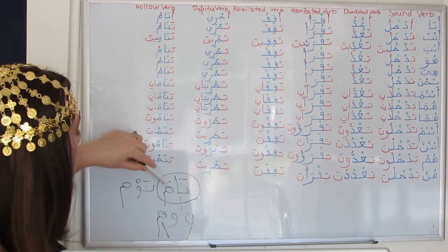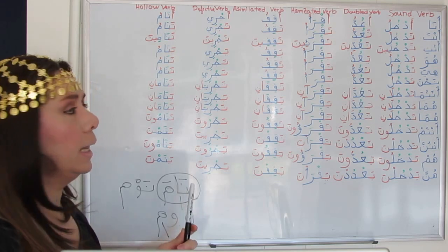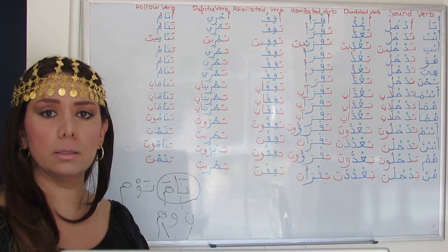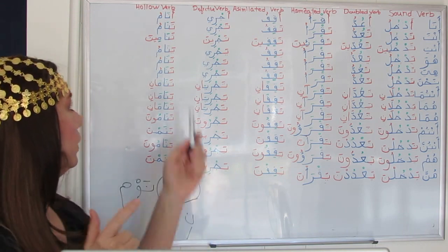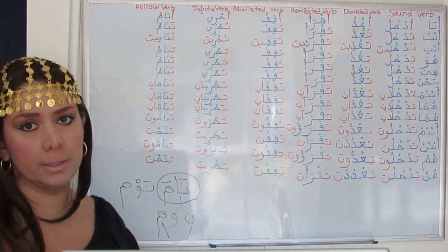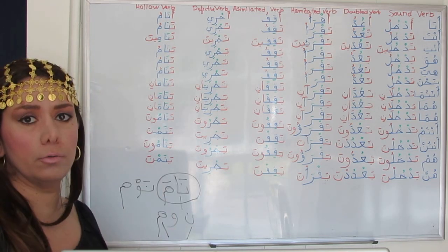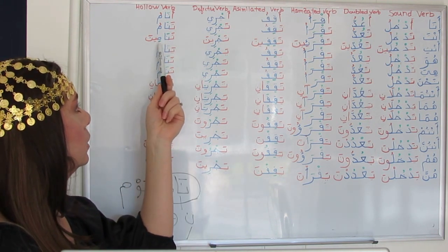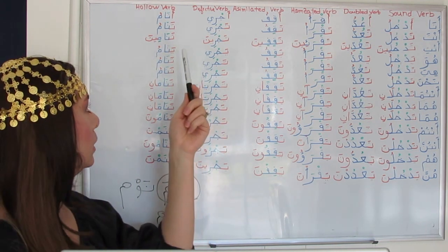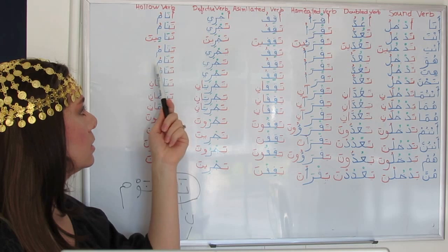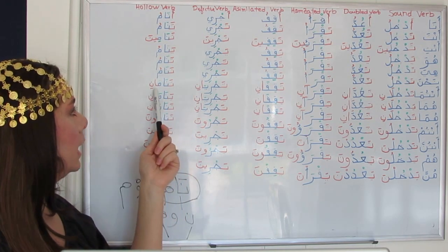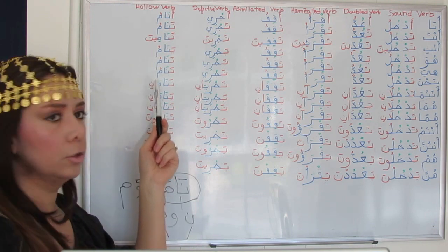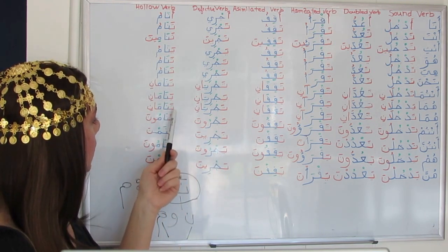We will work just with Noon and Mim for the stem naama. For ana: prefix with Alif — anaamu. We have a Fathah because it is an elongated letter followed by long vowel Alif. Anta tanamu. Anti tanamina — the 'ina' suffix is mostly preceded by Kasra. Huwa yanamu. Hiya tanamu. Nahnu nanamu. Antuma tanamani. Huma yanamani — Fathah before the long vowel Alif of the dual suffix. Huma tanamani.